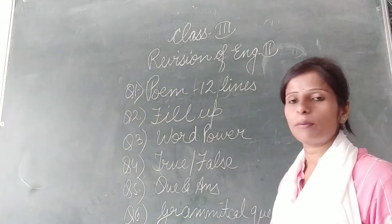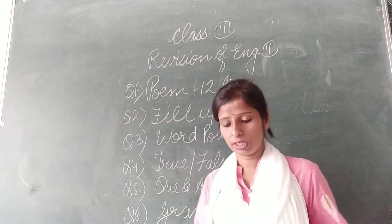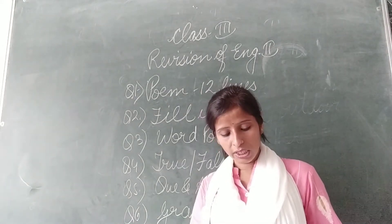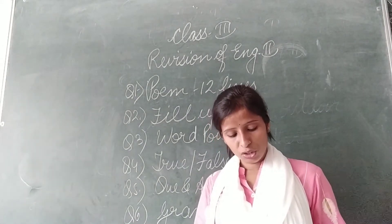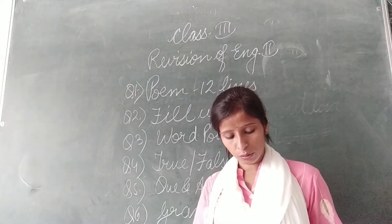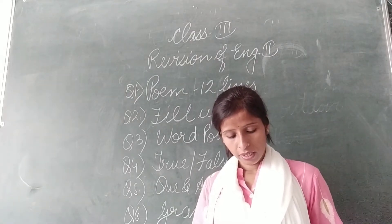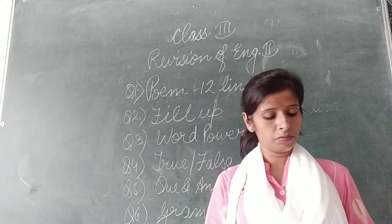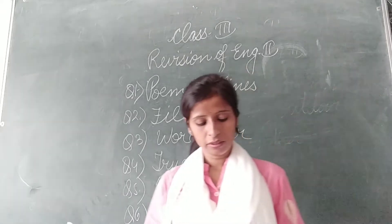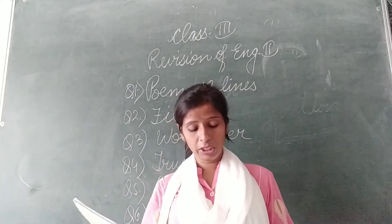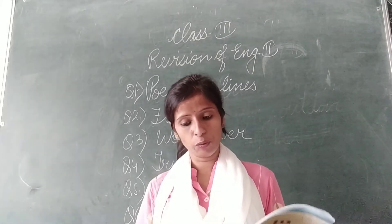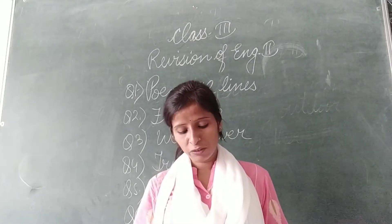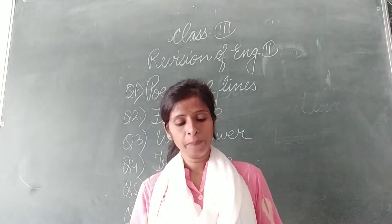And then question number 6 is grammatical questions. So if we look at chapter 11 — 'Shanku at Goinur's Day' — many questions are there. For example, word power: 'tame' — we have to learn the meaning: gentle and not afraid of human beings. 'Trapped' — to be in a place from where one cannot move away.